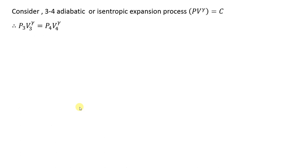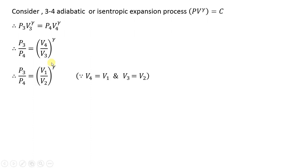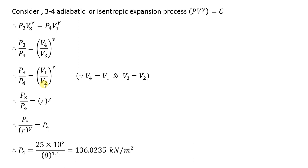Next, consider process 3 to 4, the adiabatic or isentropic expansion. Applying PV^γ = constant: P3·V3^γ = P4·V4^γ, so P3/P4 = (V4/V3)^γ. In the Otto cycle, V4 = V1 and V3 = V2, so V4/V3 = V1/V2 = r. Therefore P4 = P3/r^γ. Substituting P3 = 2500 kPa, r = 8, γ = 1.4, we get P4 = 136.0235 kN/m².